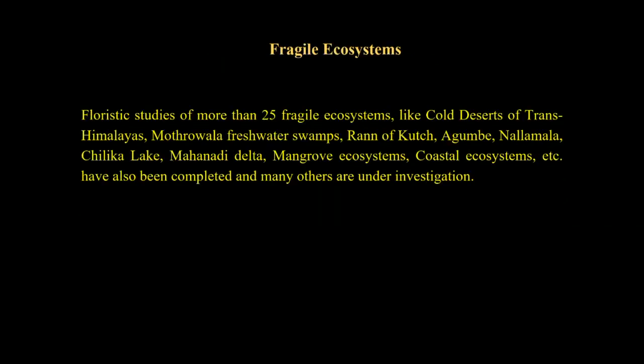In India, more than 25 fragile ecosystems exist, such as cold deserts of the Trans-Himalayas, freshwater swamps, Rann of Kutch, Agumbe, Nallamala, Chilika Lake, Mahanadi delta, mangrove ecosystems, coastal ecosystems, and others. In some regions investigation has been completed, while in many others, investigation is still underway to explore the flora.